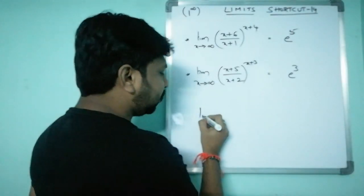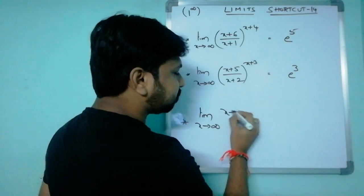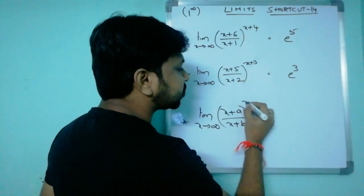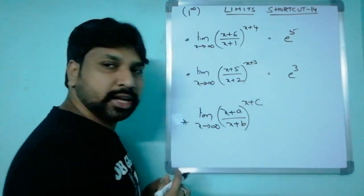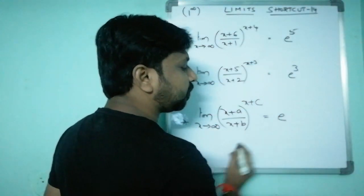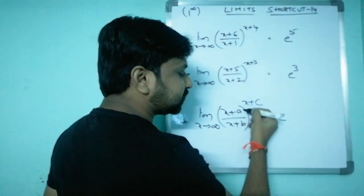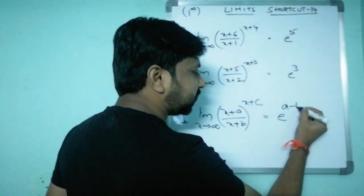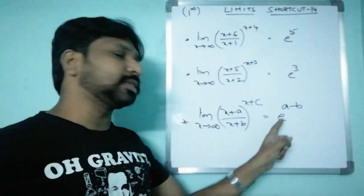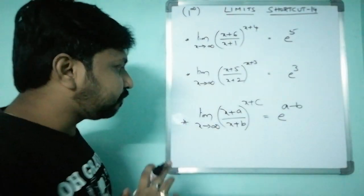The general formation is: limit x tends to infinity of (x+a)/(x+b) whole power (x+c). The shortcut formula is e to the power of (a minus b) — that is, numerator constant minus denominator constant. Just remove a minus b; e^(a−b) is your answer.